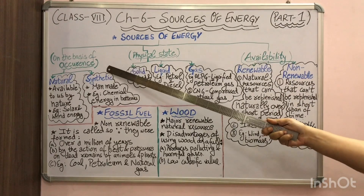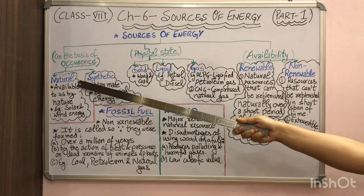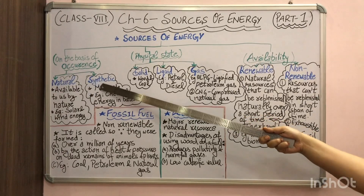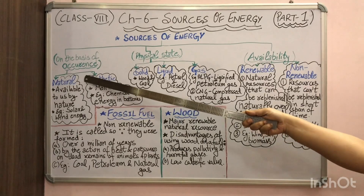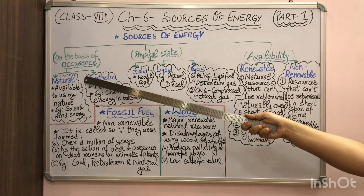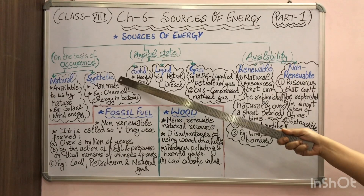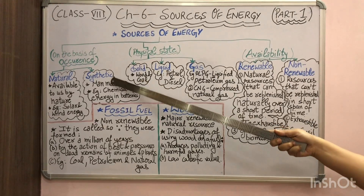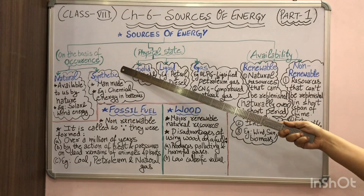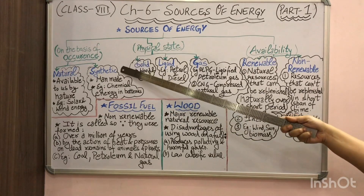The first way is on the basis of their occurrence. On this basis, sources of energy can be divided into natural resources and synthetic resources. Natural resources are those available to us in nature itself — for example, solar energy and wind energy. Synthetic sources of energy are man-made. For example, the chemical energy used in batteries is an example of a synthetic source of energy.